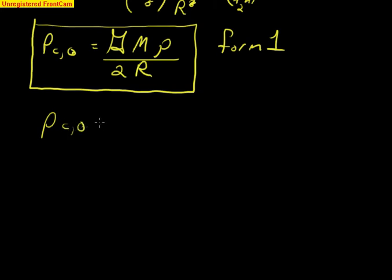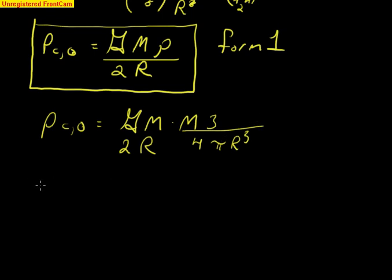Pressure at the center of the sun is equal to g, gravitational constant, times the mass, times, what is this? It's the mass, let me bring my 2r over here, mass over 4 thirds pi r cubed. That is going to work out to be our form 2 equation.